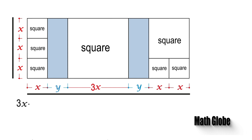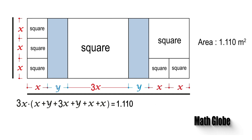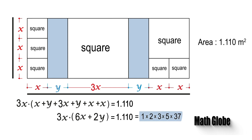Let's multiply these side lengths with each other to find an area equation for the shape with an area of 1110. Next we can simplify the equation and find the prime factors of 1110, which are 2, 3, 5, and 37. Let's play a bit more with the equation and write it in its simplest form.